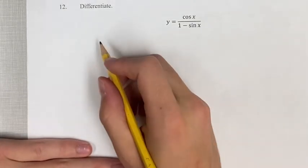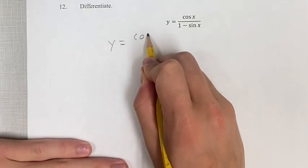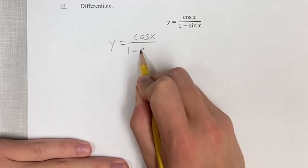In this problem, we're differentiating the function y equals cosine x over 1 minus sine x.